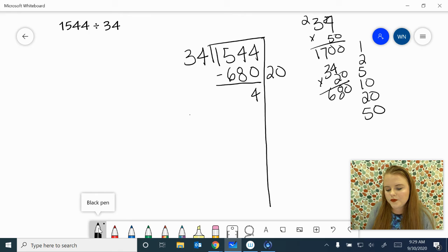4 minus 0 is 4. We're going to have to borrow from the 5, make it a 4 to make this a 14. 9, 10, 11, 12, 13, 14. That's 6.